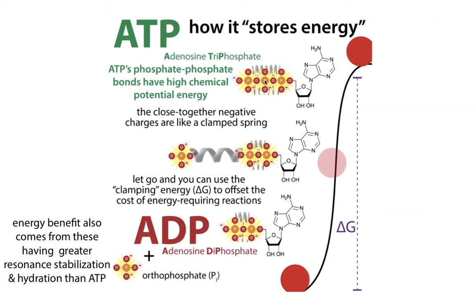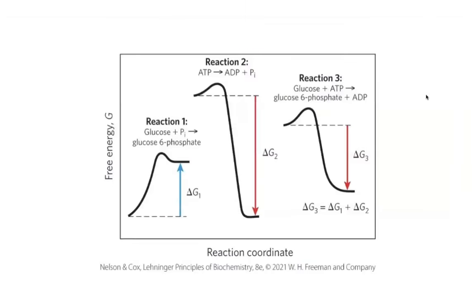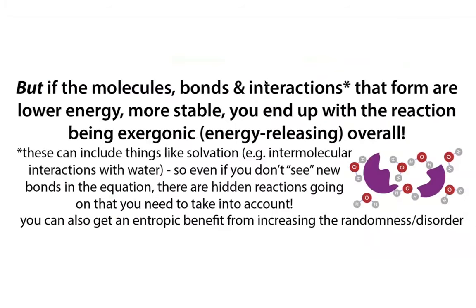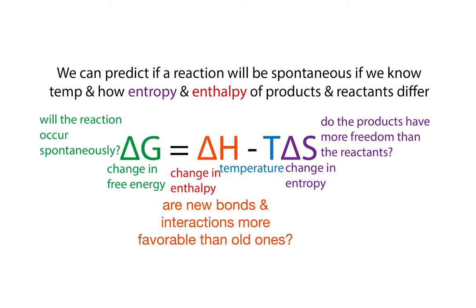If you release that clamp, your ball goes flying across the room. Instead of shooting balls across the room, our cells power unfavorable reactions by coupling the hydrolysis of ATP to those things. Once we release that repulsion, water molecules can form bonds with all those ATP parts that were released. If it took energy to break bonds, we get energy when we make bonds — and it's not just covalent bonds that matter. By forming hydrogen bonds and ion-dipole interactions with water, we get an enthalpic gain.